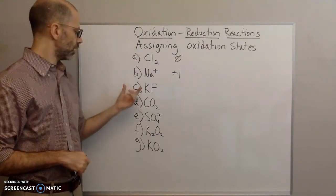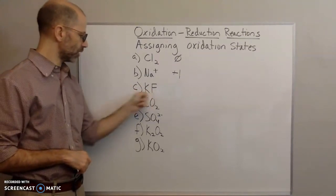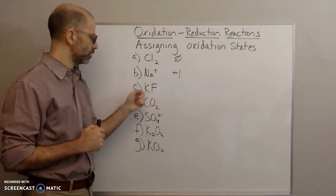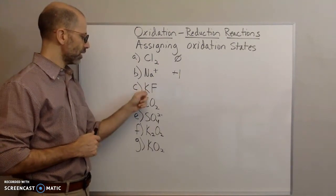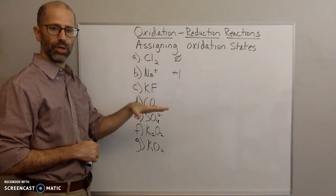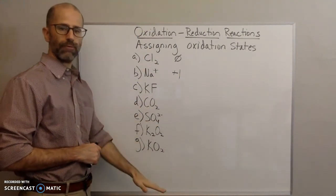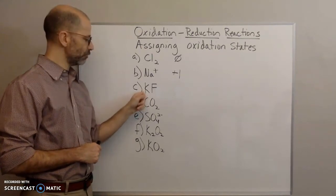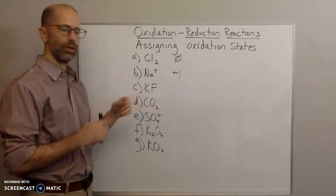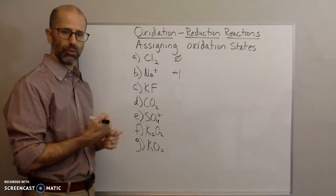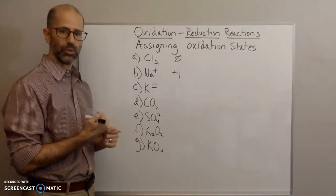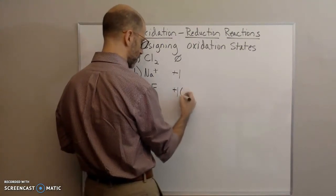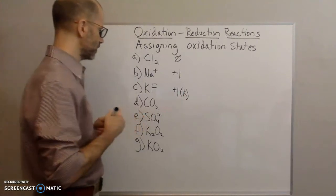For the third one, we have an ionic compound — it has a metal and a nonmetal. There's a hierarchy: rules one, two, and three, and then four and five. We're going to apply rule number four first, which says the oxidation state of group one elements is always plus one. So we assign plus one for the potassium.